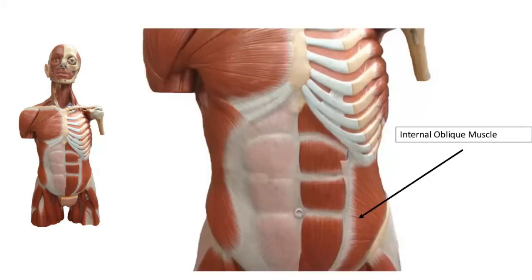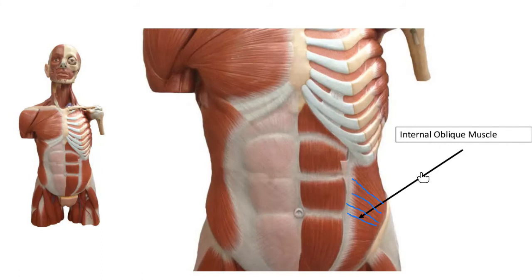The next muscle on the deeper side is the internal oblique. These fibers go up and in — pretty much the opposite direction from the external oblique. So you have the external oblique, the internal oblique, and the rectus abdominis. These muscles are what people are talking about when they say they need to work out their core.